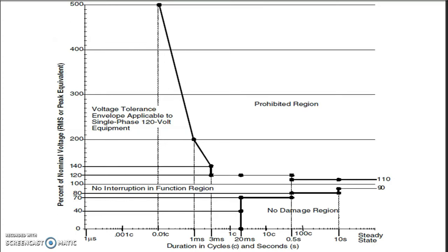Looking at the ITIC graph, on the x-axis we have seconds as well as number of cycles, and on the y-axis we have percentage of nominal voltage. The area above the graph is the prohibited region — if we go beyond this, equipment is subject to damage. The area below the graph is the no damage area, where equipment may not function satisfactorily but damage will not occur. The area within the graph is the voltage envelope in which equipment works satisfactorily.